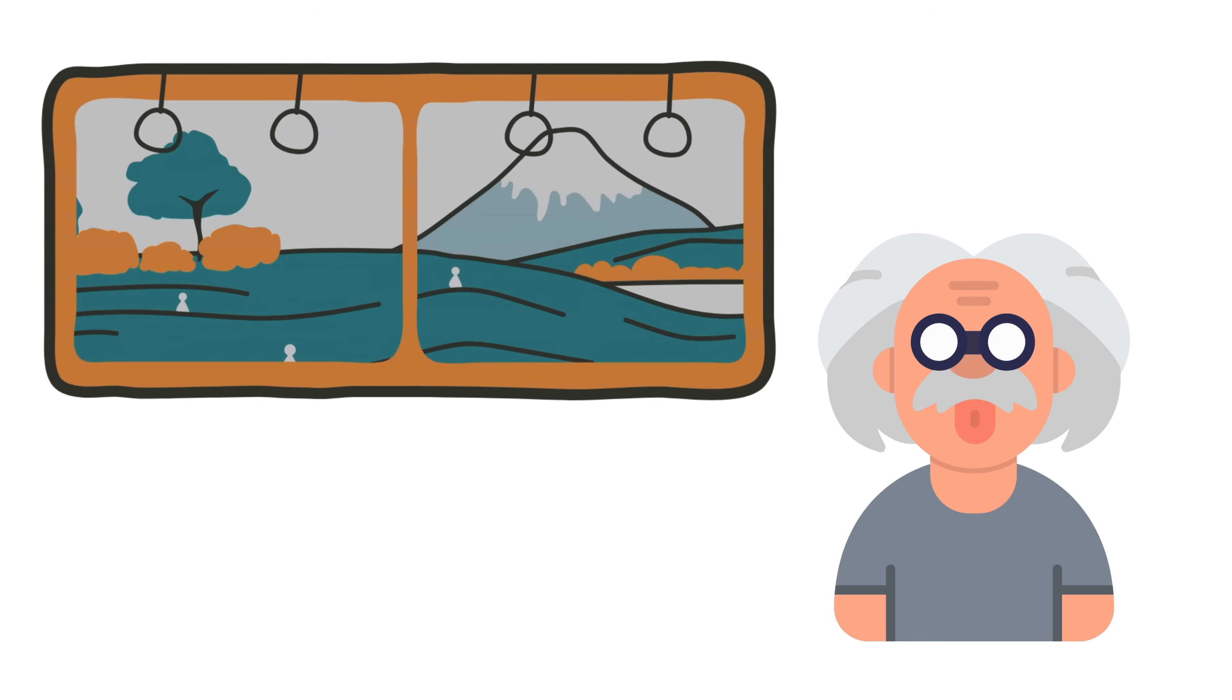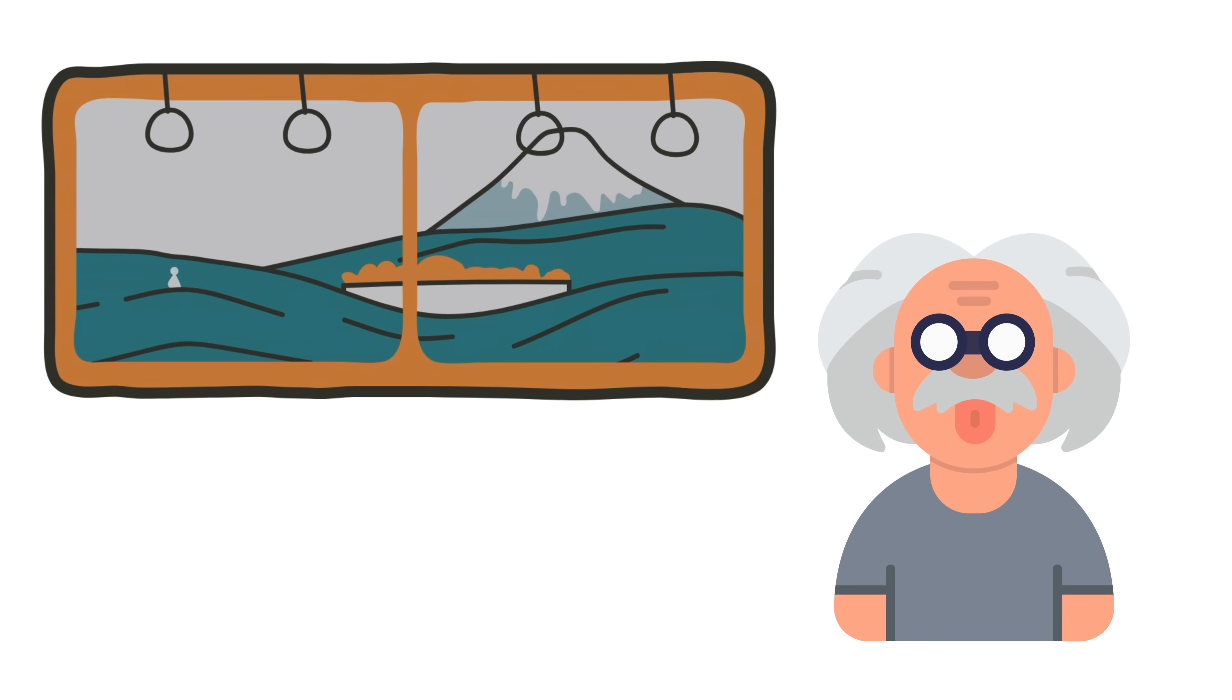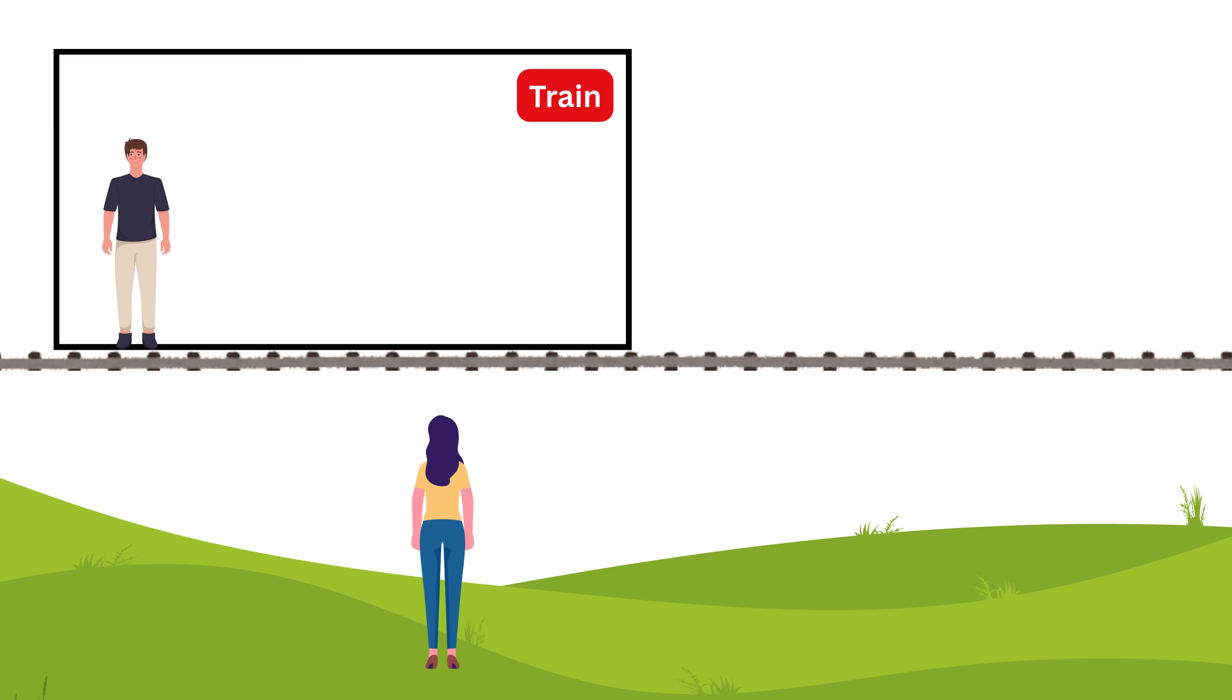Since Einstein loved using trains in his thought experiments, let's imagine one too. Picture this: Alice is standing on a train platform. A train is moving at a constant speed v past her from left to right.